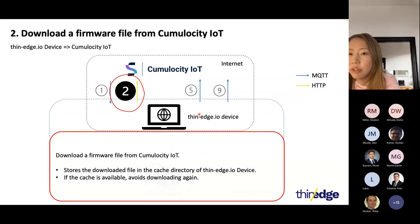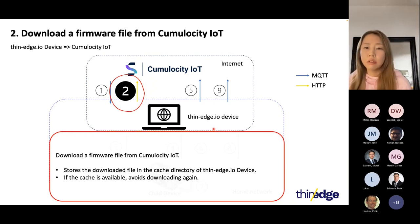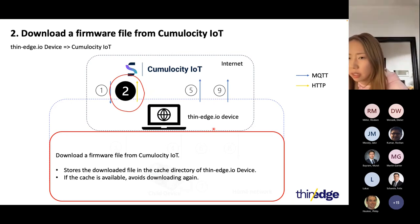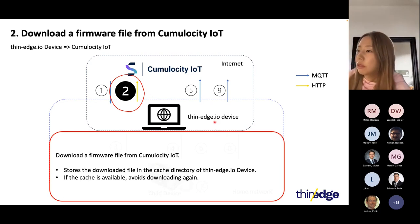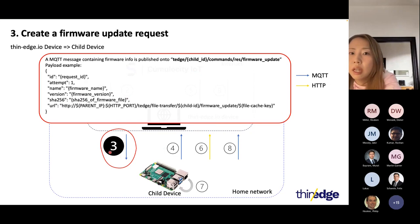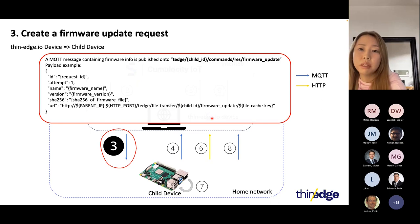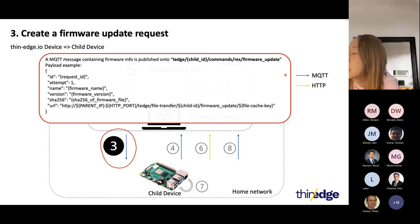Having a cache avoids re-downloading the same file again. Imagine you have multiple child devices and want to apply the same firmware to all of them — you don't want to download the same file again and again per operation. This cache feature is very helpful for that situation. Step three: now the firmware file is available inside the thin-edge device, so it can create a firmware update request to the child device, sent as an MQTT message.